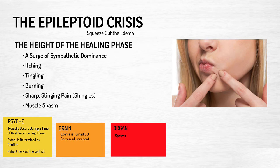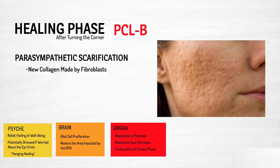The epileptoid crisis is the height of the healing phase — when the maximum amount of fluid has filled the area and the body needs a sympathetic stress push to squeeze out the edema and get things moving back to a normal day-night rhythm. This is where you'll have itching, tingling, burning, some type of sensation or muscle spasm at the area. In the case of shingles, there's a very sharp stinging pain during the healing phase. The second phase of healing is scarification — fibroblasts and new collagen are made, building back up and restoring the area to a pre-conflict status.